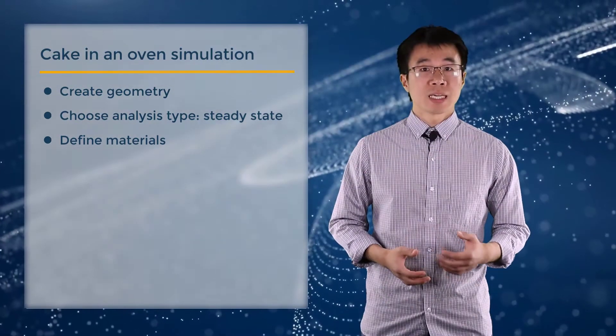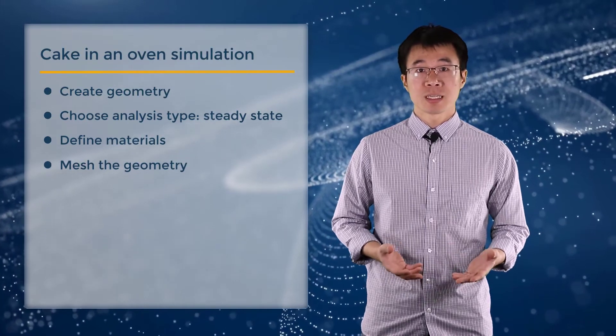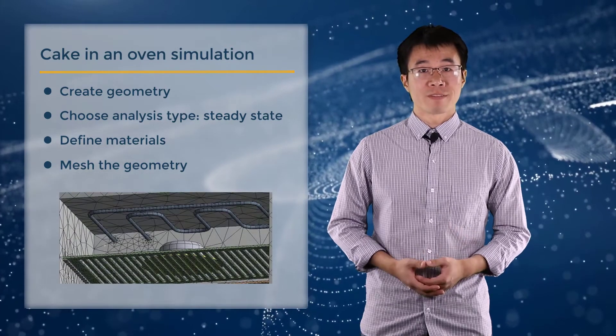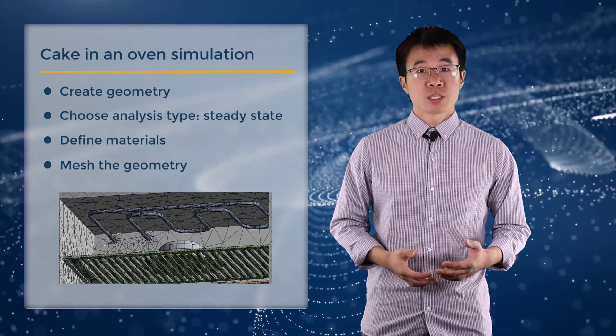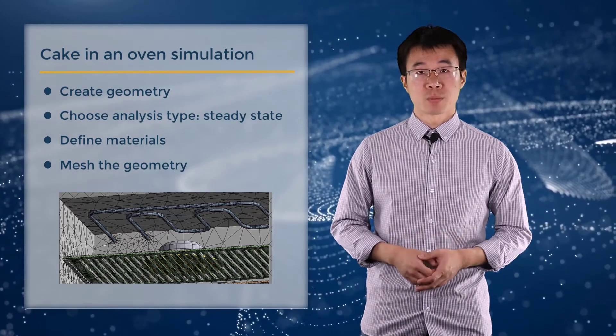...we'll need to discretize the domain by meshing it. And since radiation is a nonlinear problem, for this example, we'll use a relatively coarse mesh to make the simulation run faster. But a finer mesh is used for the coil because we want to capture the curvature of the geometry properly.